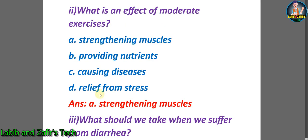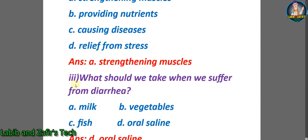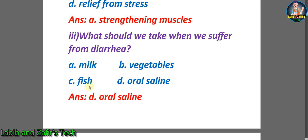Number two: what is an effect of moderate exercises? A) strengthening muscles, B) providing nutrients, C) causing diseases, D) relief from stairs. The correct answer is A) strengthening muscles. Number three: what should we take when we suffer from diarrhea? A) milk, B) vegetables, C) fish, D) oral saline. The correct answer is D) oral saline.